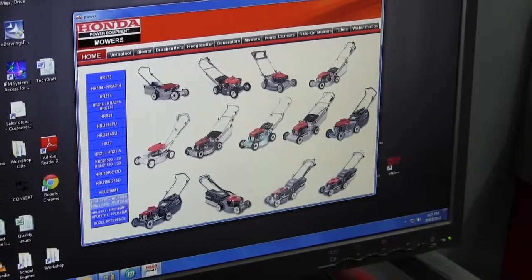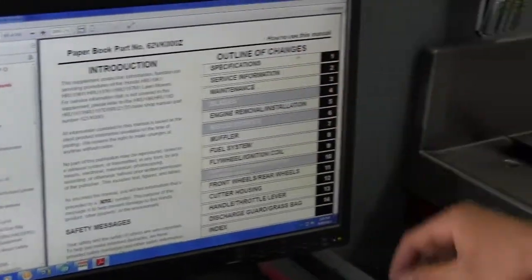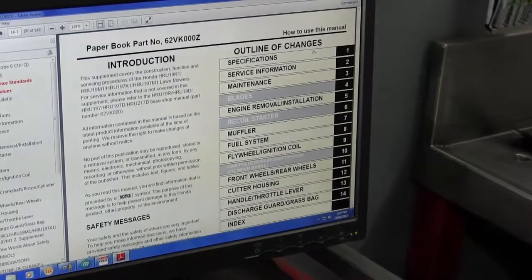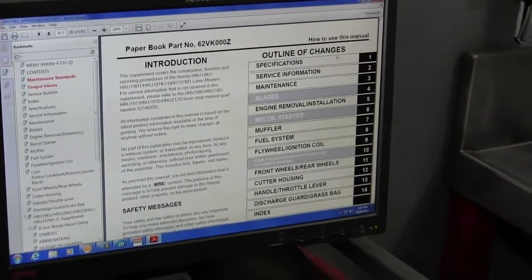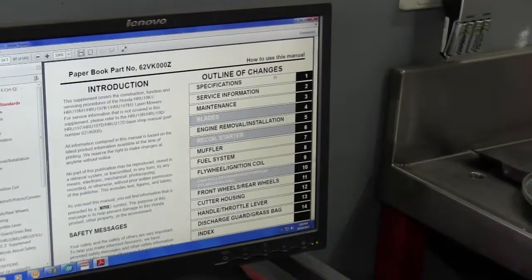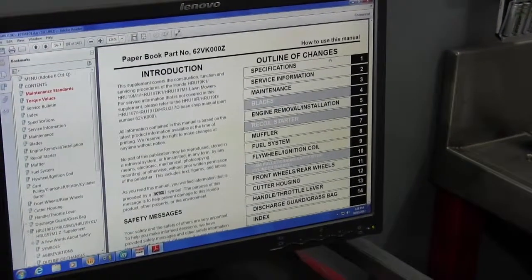This is the model we've got on the bench here. As it says here, there's an outline of changes when there's a new model. Rather than printing a whole new workshop manual, there'll be a supplement outlining any changes made from the old model to the new model, if there are similarities in the models.